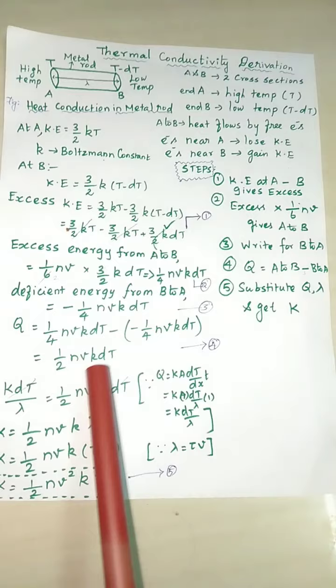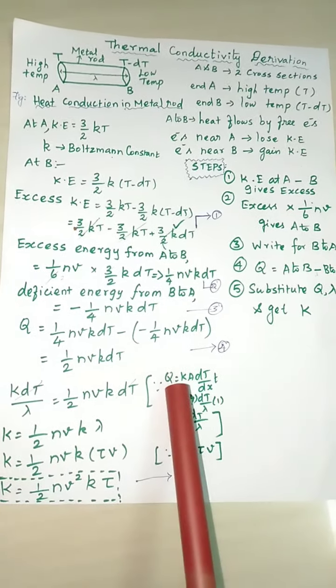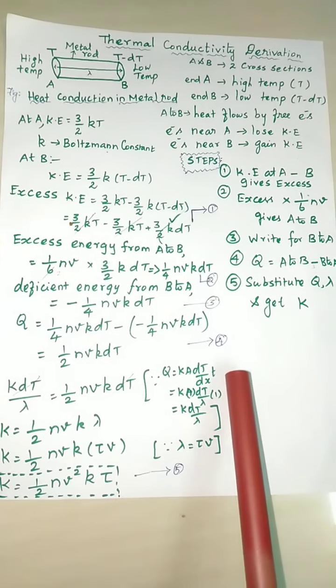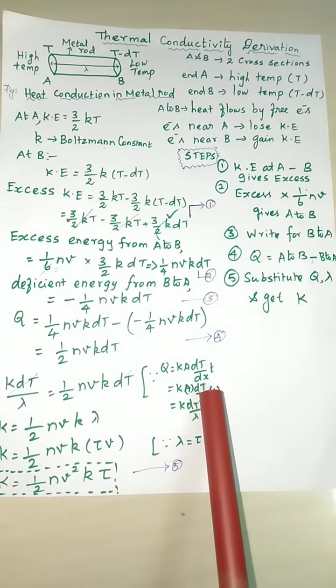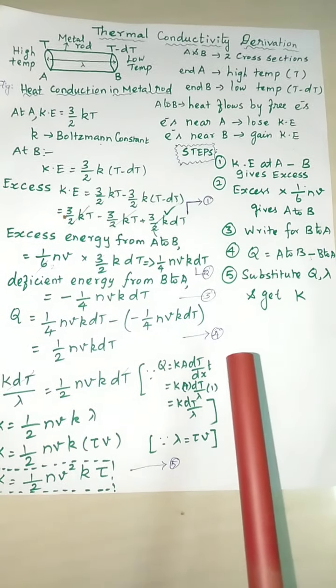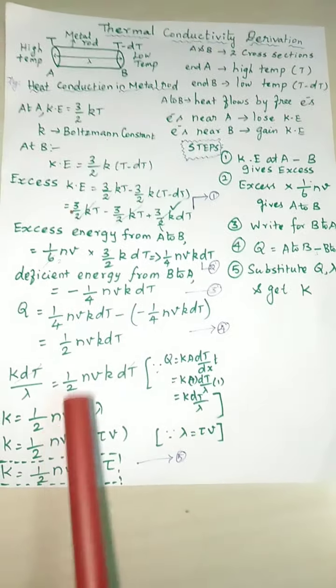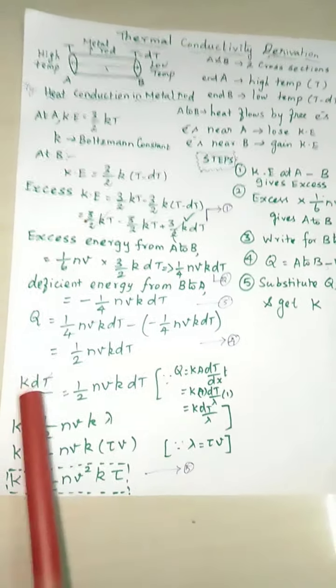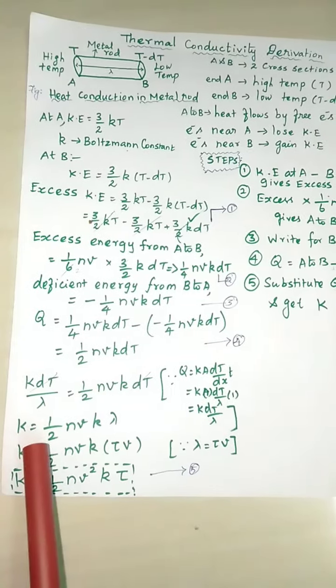So 1 by 4 NVkDT minus of this minus gives us 1 by 2 NVkDT. Already we know the Q formula: Q is equal to KA(DT/DX) into T. Substitute that value - instead of DX we have to write lambda. When you substitute, DT DT cancel.